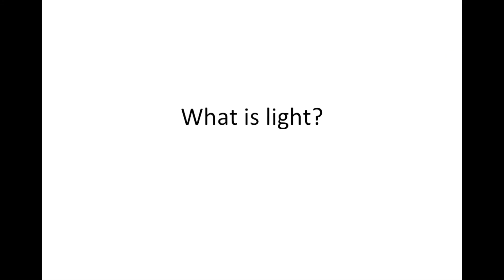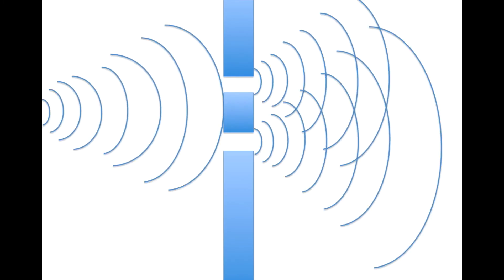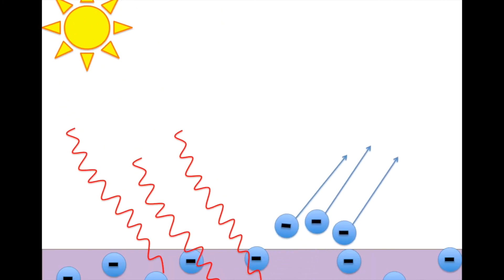So finally, what is light? Is it a wave? Or is it a particle? Because, of course, as we saw in the Young's slit experiment, it acted like a wave. But yet, in the photoelectric effect experiment, it acted like a particle.